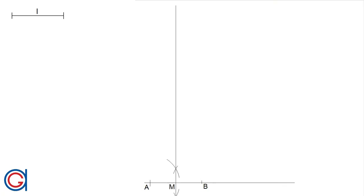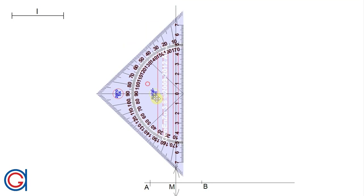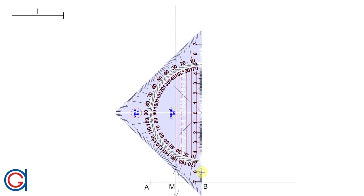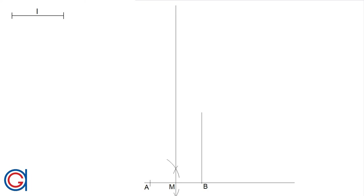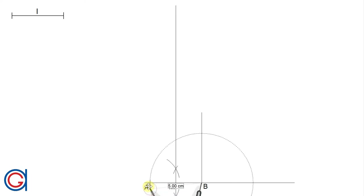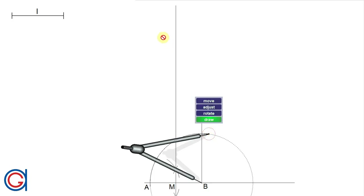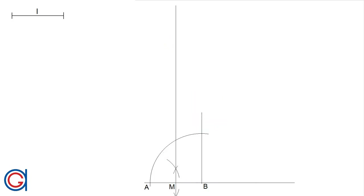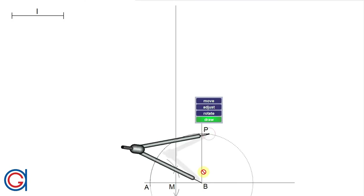Now let's draw the perpendicular line starting from point B — this line must be longer than the line segment AB. Setting the compass to the length AB, we scribe an arc on this previously drawn perpendicular line, and this arc intersects our line at a new point which we will call P.